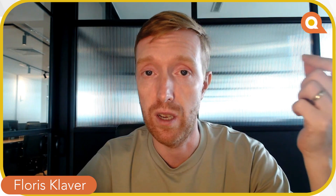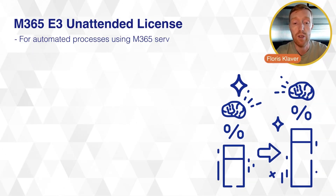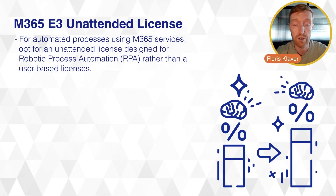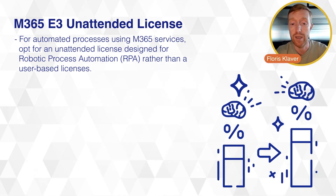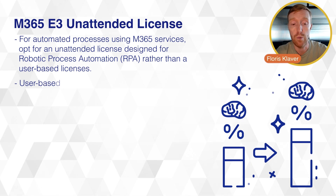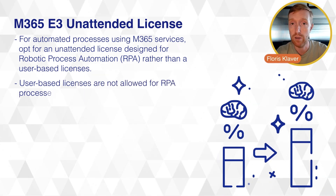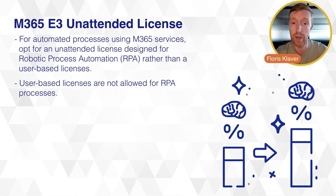Microsoft does not allow you to use a user-based license like M365 E3 per user on a server device and use RPA in that sense. So if you automate certain processes which require the use of M365 services, what you would require is a Microsoft 365 E3 unattended license. This would help you with all the services you require to do robotic process automation, so if you run any bots on your environment, this would be the way to do it.